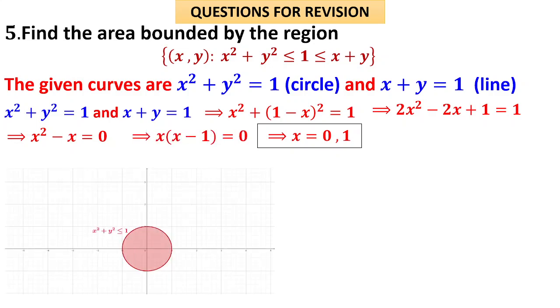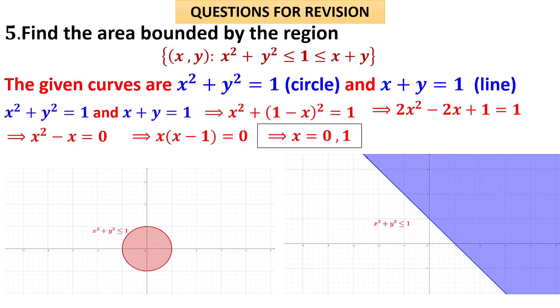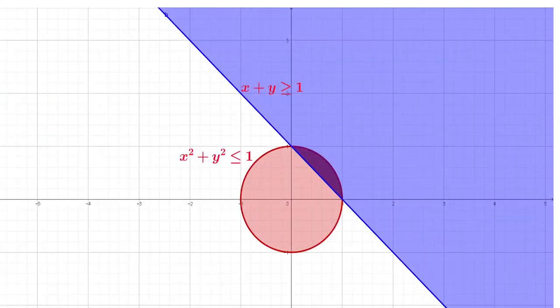The region x² + y² ≤ 1 is all points inside the circle. The region x + y ≥ 1 is the area on the side of the straight line where the origin is not included. The shared (shaded) region is the intersection — inside the circle but on the side of the line that excludes the origin — as visible in the diagram.